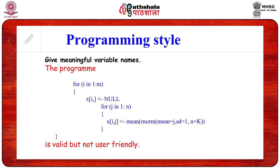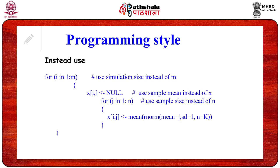Next, look at this program — the indenting is proper, but it still lacks something. Just looking at it once, will you be able to understand what is happening? Probably not. The program is valid but not user-friendly. Instead, if you use simulation_size instead of m, sample_mean instead of x, and sample_size instead of n, it would be easier for those using your program. Moreover, it would also help you understand your program at one go even after a substantial gap of time.